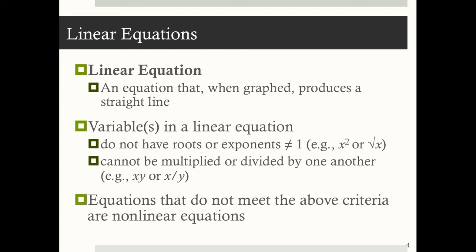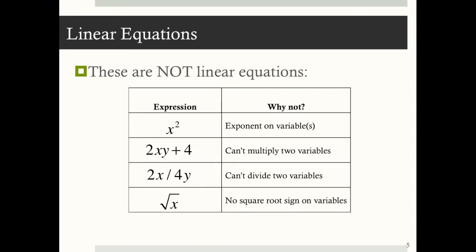Equations that do not meet these criteria are nonlinear equations, which is something that we talk about next week. Let's go through some examples of things that are not linear equations. The expression x squared is not linear because there's an exponent on the variable. 2x times y plus 4 is not linear because you can't multiply the two variables. 2x divided by 4y is not linear because you can't divide two variables. And the square root of x is not linear because you can't have a root sign on variables.